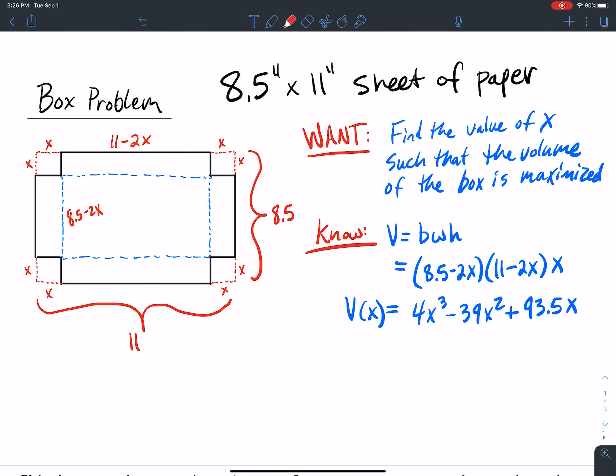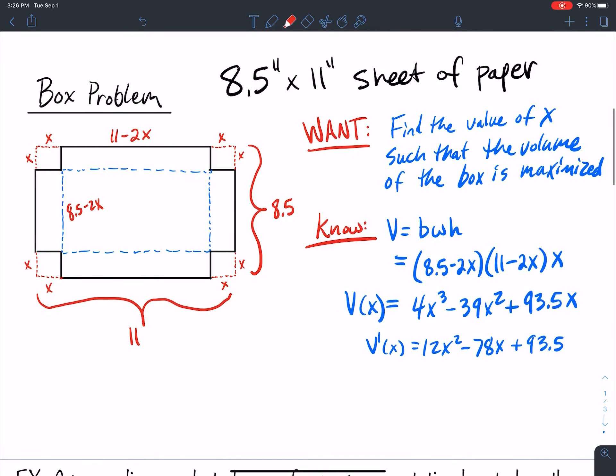Once you do that, you've got your formula in terms of one variable. It's time to take the derivative. So the derivative with respect to x of the volume: the derivative of 4x³ is 12x². The derivative of -39x² is -78x, and then this is just 93.5. So we have a parabola here for our function.